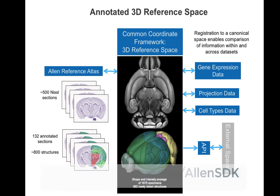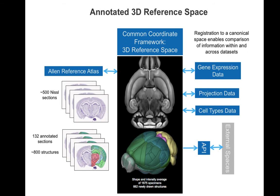This digital reference brain is available for download from the Allen Institute API or the Allen Software Development Kit. Most of the adult mouse brain data, including gene expression, neuronal projections, and single cell morphology, has been registered into this reference space.